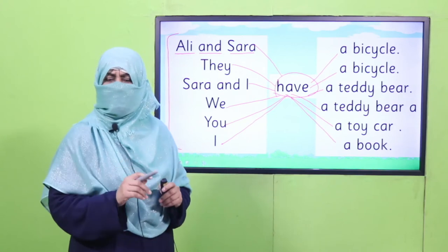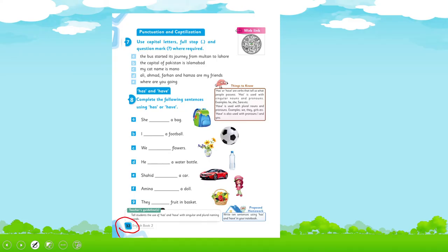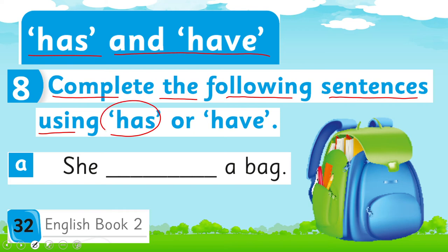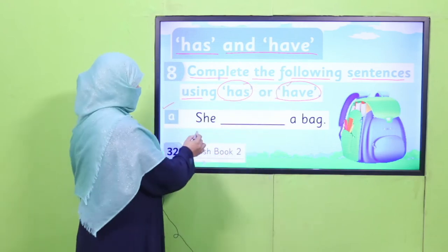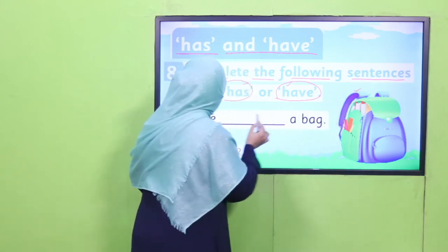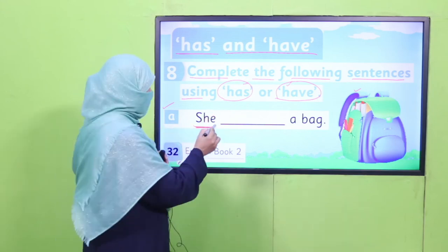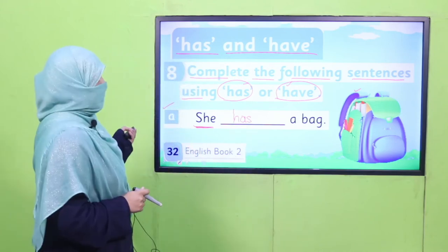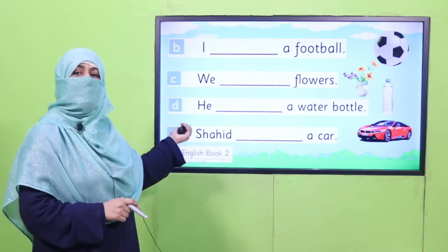Yes, my dear children. Are you done with it? That's good. Now it's time to practice the concept which we learnt. Open your book on page number 32. Let's practice. The book is asking us to complete the following sentences by using has or have. The sentence is: she dash a bag. For showing possession for a singular — for she — what do we use? Has. So we write has: she has a bag. Likewise, look at the picture, read the sentence, and fill in the blank by using has or have. Pause the video and complete these sentences.